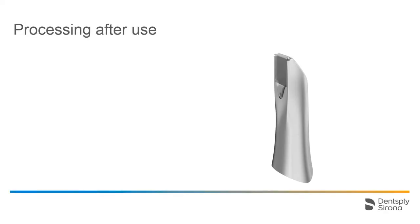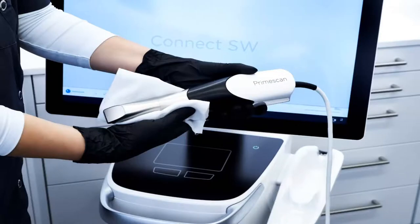Next, let's look at the steps after use inside a patient's mouth and the associated processing of the sleeve. First, perform a wipe disinfection of the acquisition center, including the scanner. For detailed information about this process, please refer to our video tutorial entitled Acquisition Center and PrimeScan – Cleaning and Disinfection Procedures.